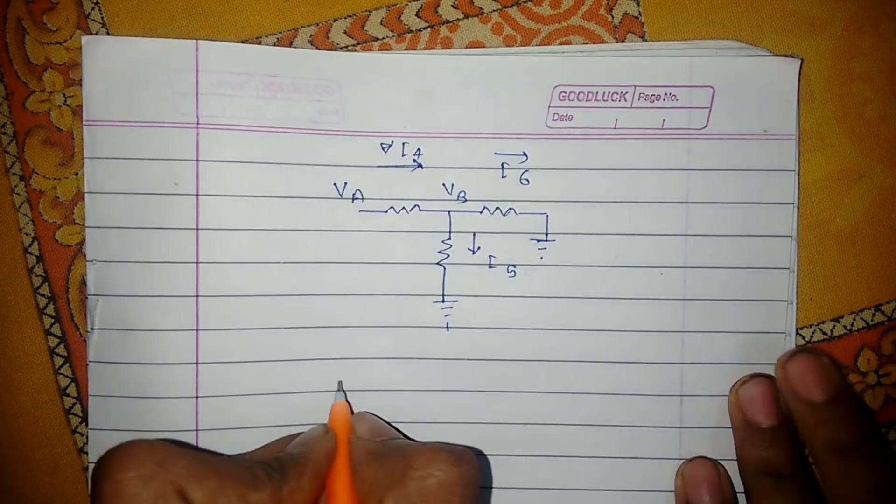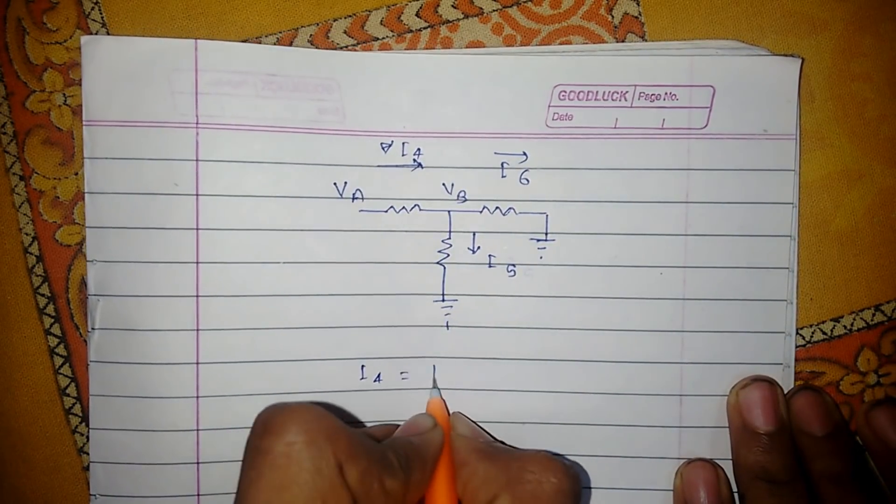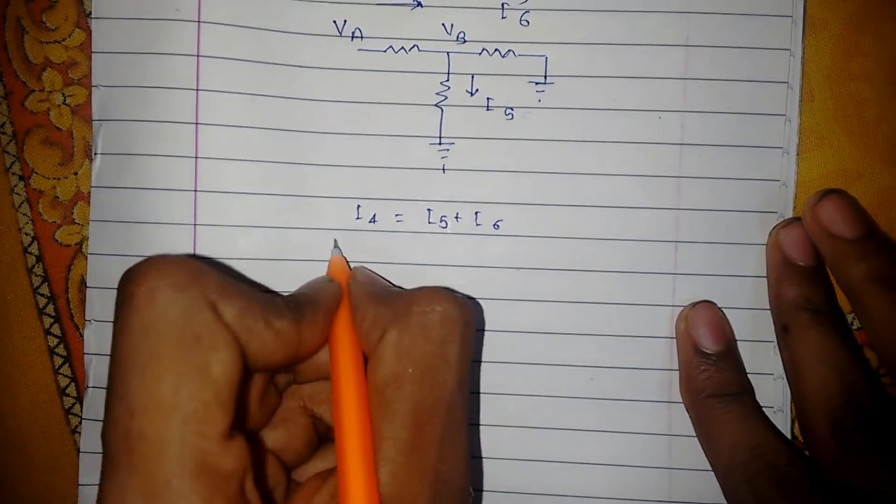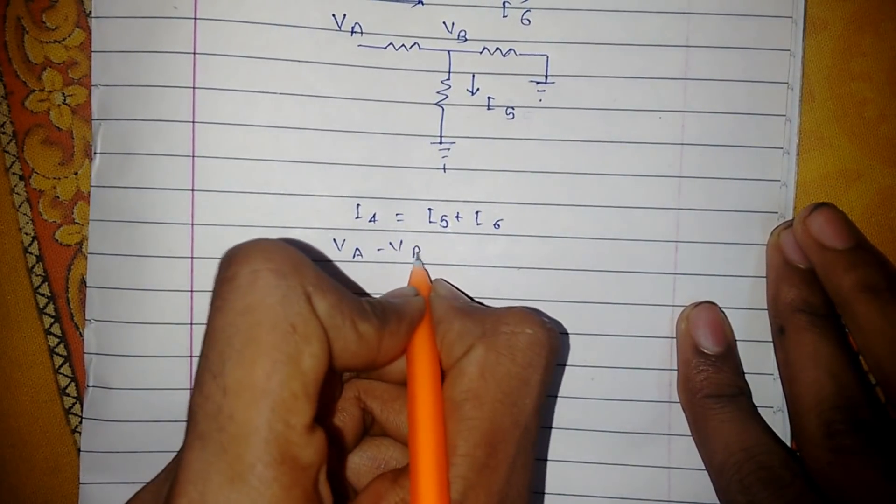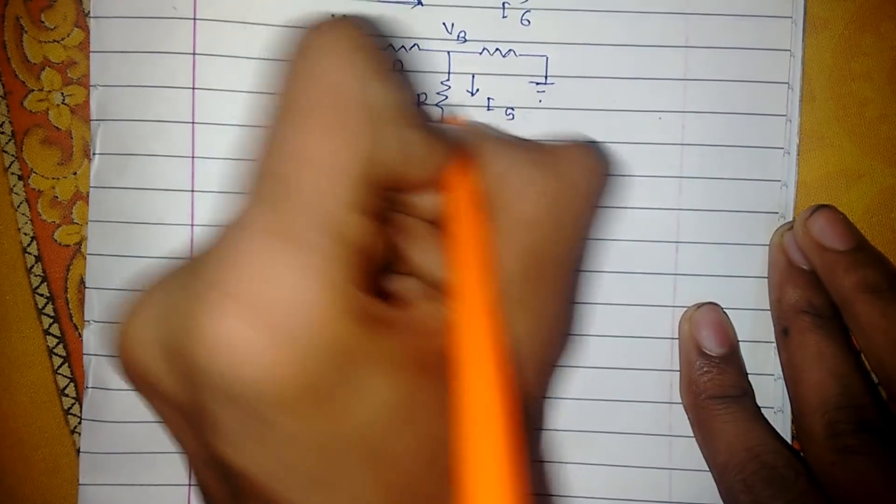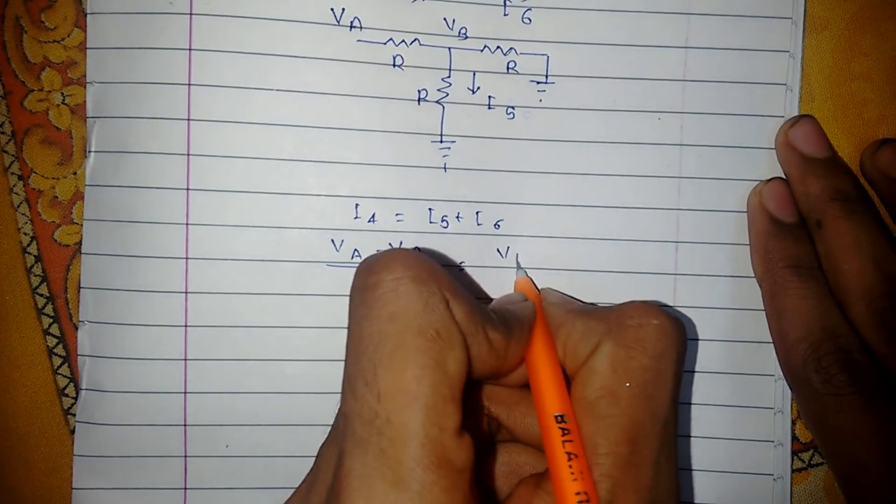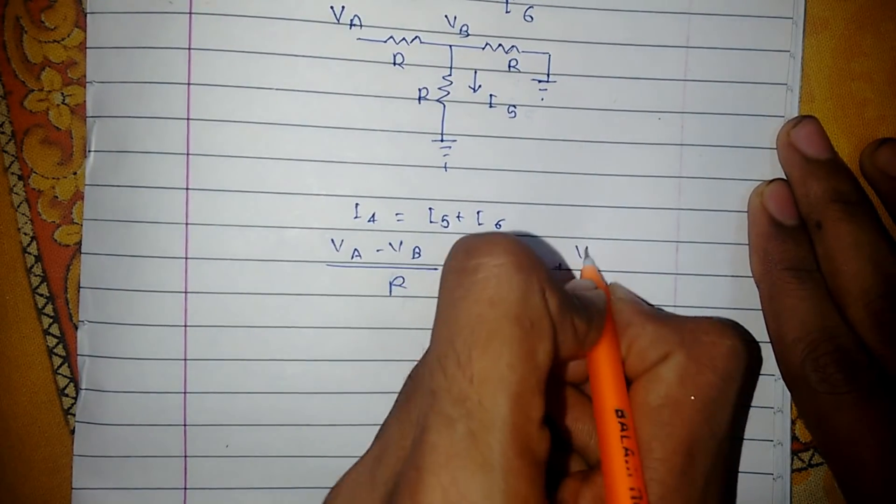Now according to KCL, I4 is equal to I5 plus I6. Hence VA minus VB upon R, as all resistances are equal to R, equals VB upon R plus VB upon R.